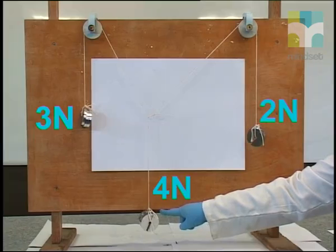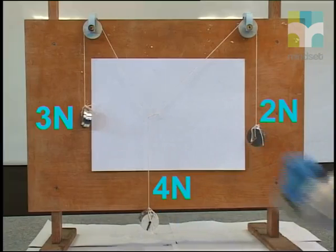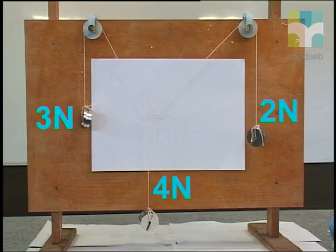This 4 newton force acts vertically downwards towards the center of the earth. These 2 forces on the sides are not pulling directly upwards, but they are able to balance the vertical downward force.